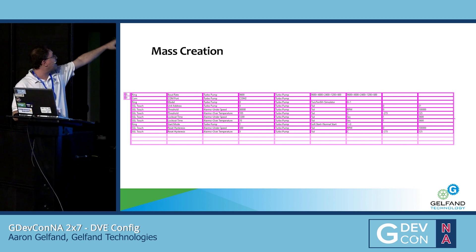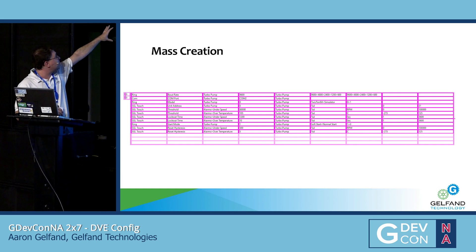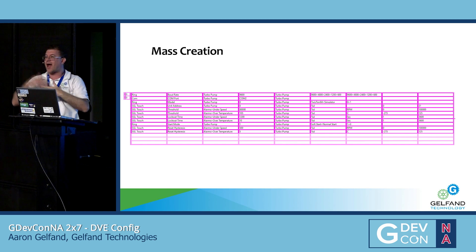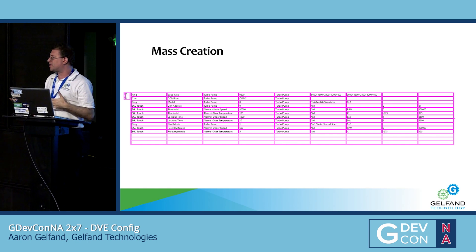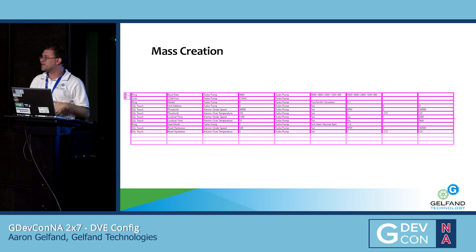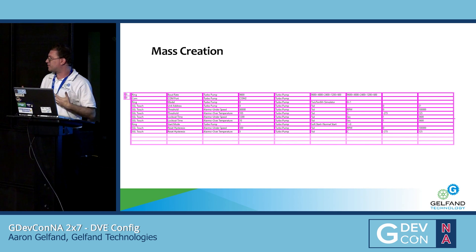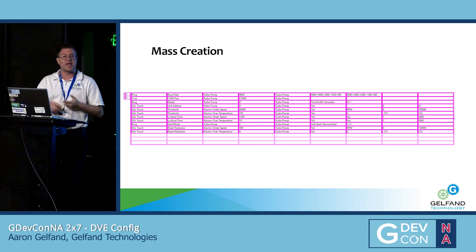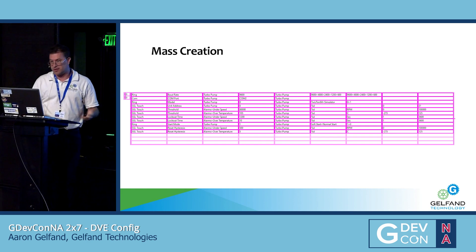Here I'm specifying the type of information, the names, the default values, and for ring controls, what options are being presented to the user. For Booleans, I can also specify the labels — instead of true/false, I can say open/closed, on/off, or enabled/disabled.